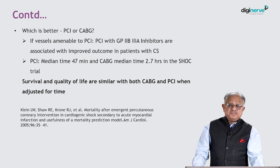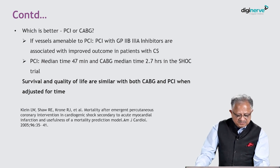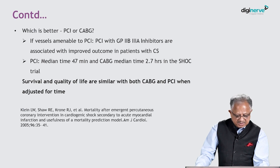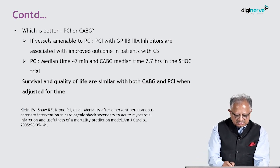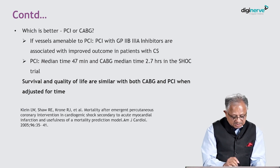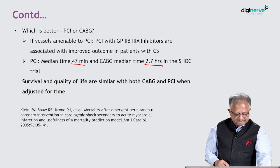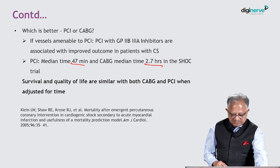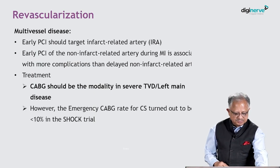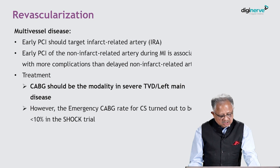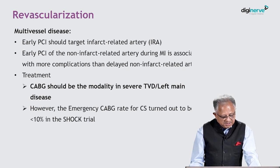Regarding PCI versus CABG: if vessels are amenable to PCI, PCI with antiplatelet medications improves outcome. The median time for PCI was 47 minutes versus 2.7 hours for CABG, although long-term survival is similar for both. In multi-vessel disease, early PCI should target the culprit vessel.